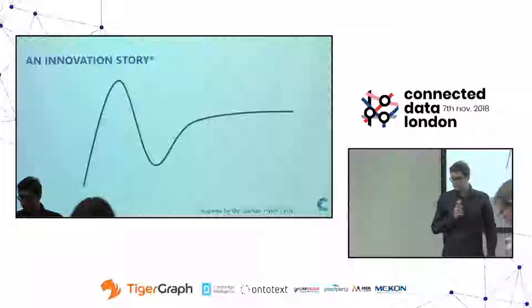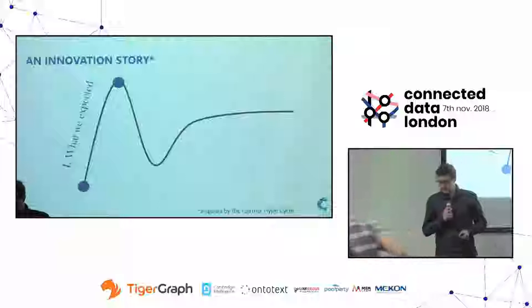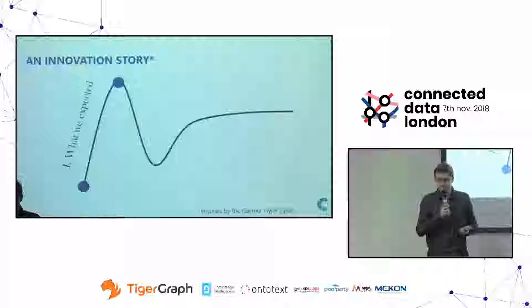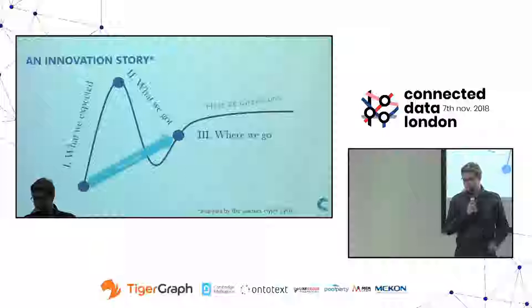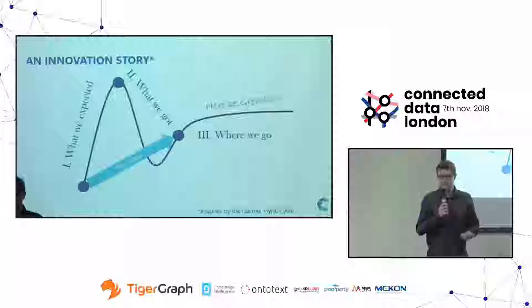Our innovation story will be based in three parts. The first part will be what we expected from our new platform that our new product was built on. The second part will be what we actually got. And the third part, of course, the future — where we will go. As you are in the Atlas track, hopefully you can build on our experience and spare yourself some hassle.